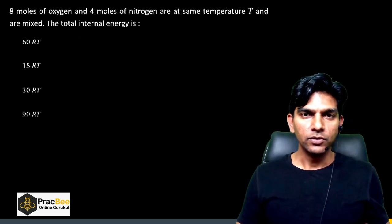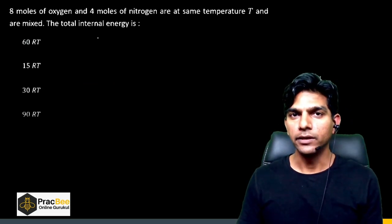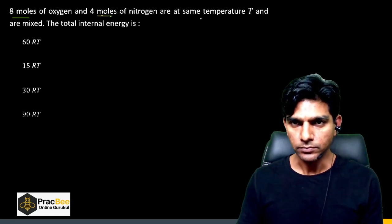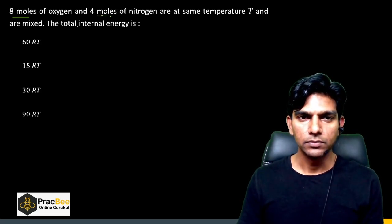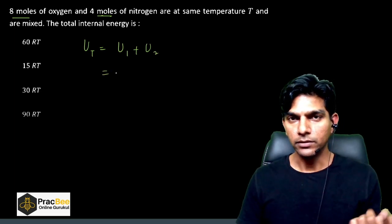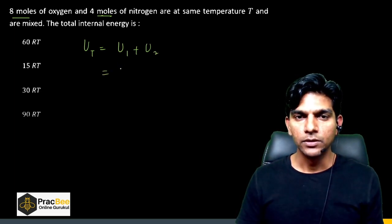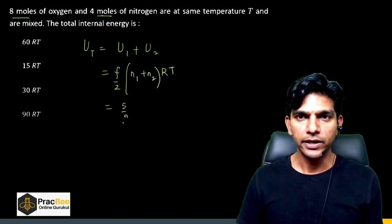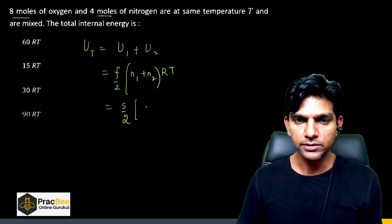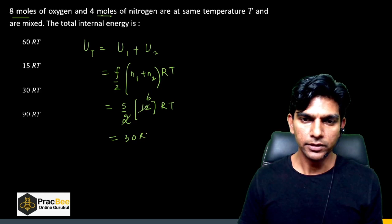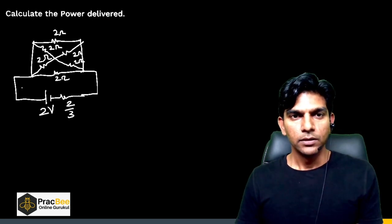The next question is from Thermodynamics — internal energy of a gas mixture. We have 8 moles of oxygen and 4 moles of nitrogen, both diatomic gases at the same temperature. Total internal energy = (f/2)(n₁ + n₂)RT. For rigid diatomic gases f = 5, so U = (5/2) × 12 × RT = 30RT. Option C is the right answer.